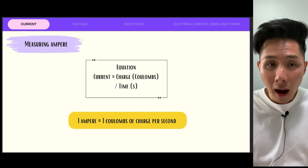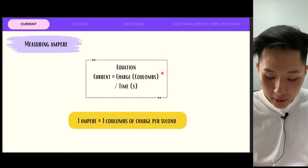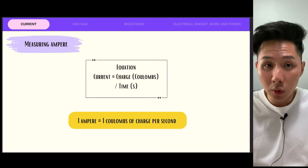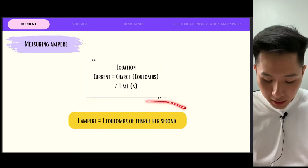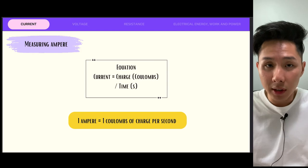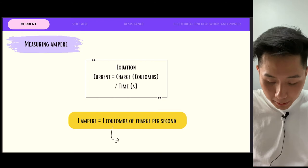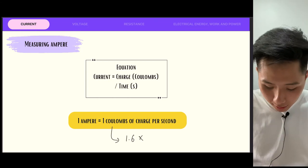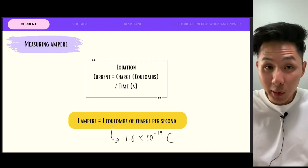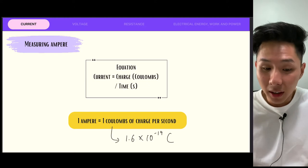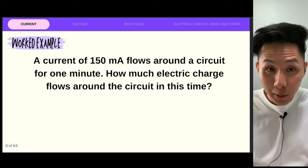Here I want to show you how to quantify current. There's a formula: basically, current is the amount of charge passed through in one second. So one ampere means one coulomb of charge passed through the circuit in one second. From the last chapter, one electron equals 1.6 × 10⁻¹⁹ coulombs, so one ampere basically means there are tons of electrons flowing in the circuit. Let's look at some worked examples.